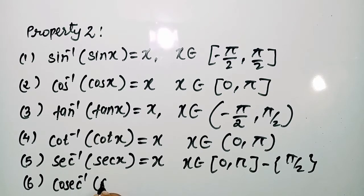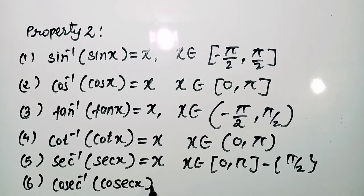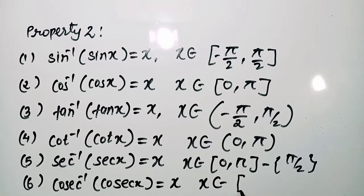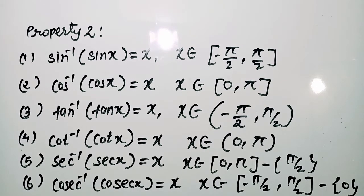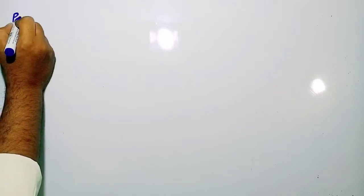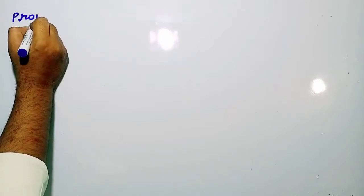Next, cosec⁻¹(cosec x) = x, where x belongs to [−π/2, π/2] excluding 0. So students, these are the second properties of inverse trigonometric functions.